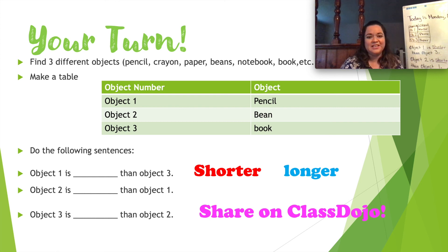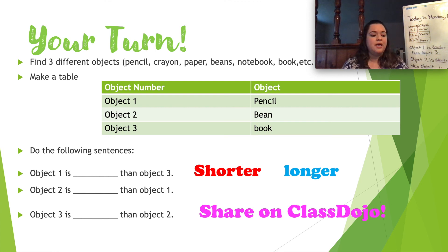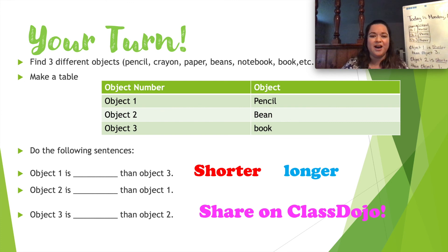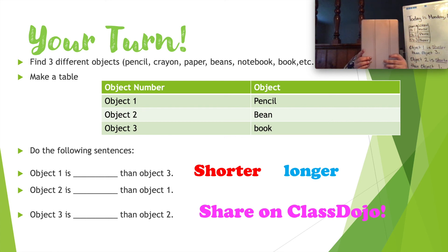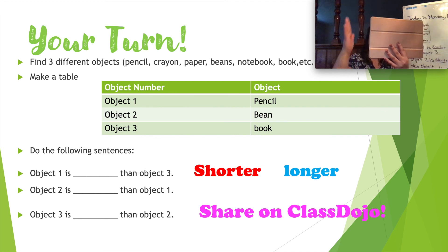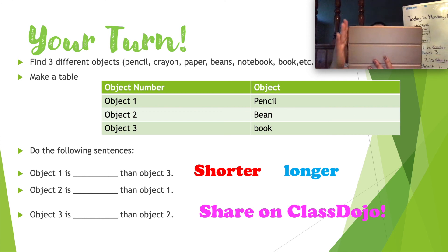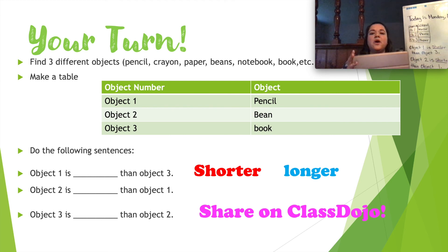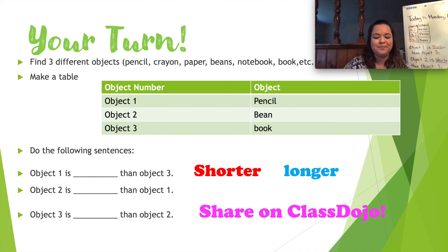I hope you have fun comparing the different objects you choose. Remember: when we talk about length, we can always compare one object to another. Length is the longest part of an object. So if this is my object, what part would be the length — the top or the side? The longest side, right. It doesn't matter if I flip it over — we're always looking at the longest side of an object for its length. Can't wait to see all your work. I'll see you soon. Take care, bye-bye!